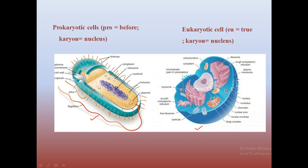The name itself is the definition. Prokaryotic cell: 'pro' means before and 'karyon' means nucleus. So the prokaryotic cell came into existence before the nucleus came into existence. In case of eukaryote, 'eu' means true and 'karyon' means nucleus, so it came after the nucleus came into existence.